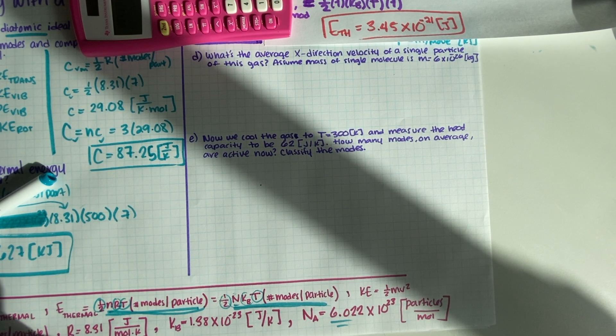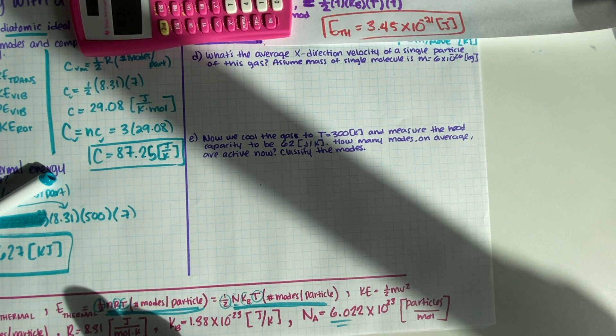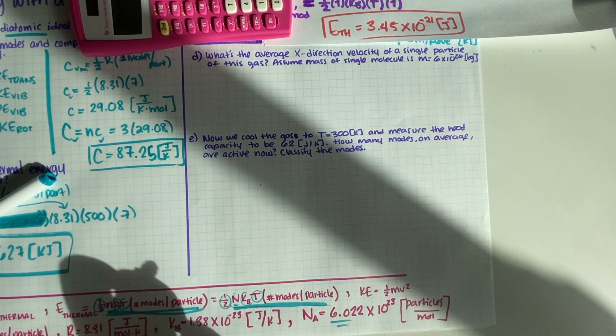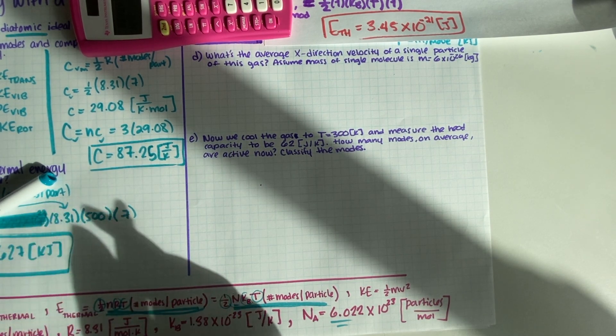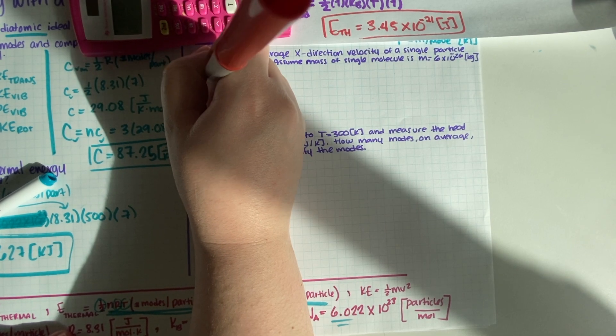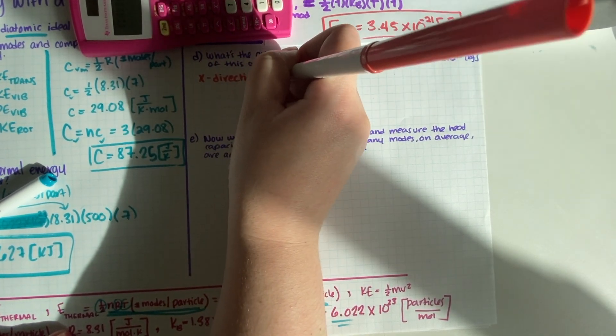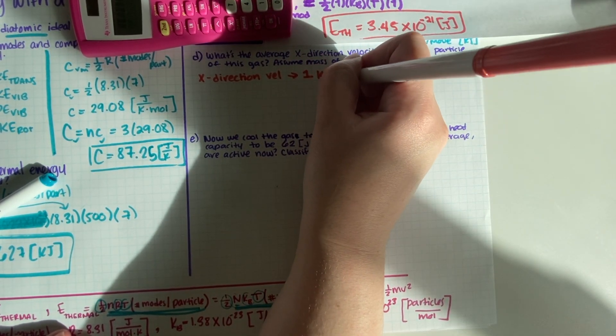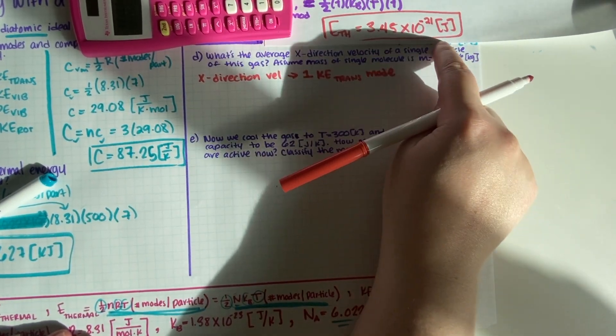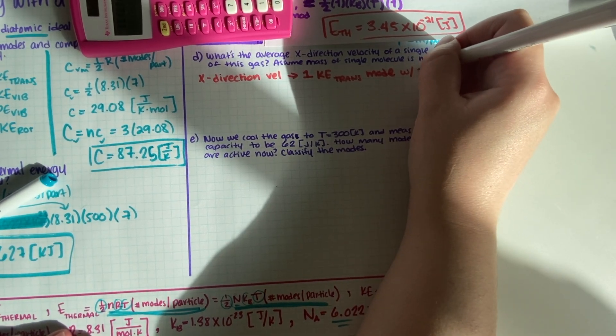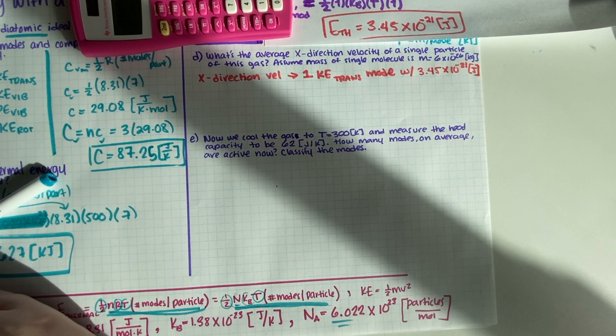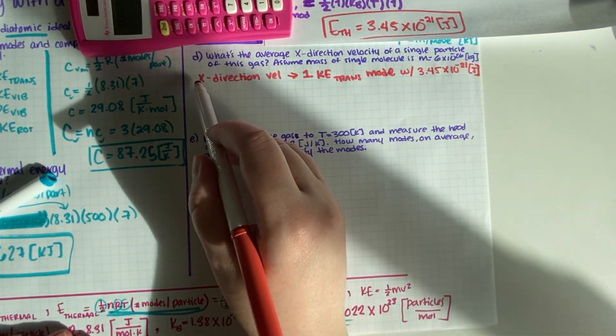So now for part D what is the average x direction velocity of a single particle of this gas, assume mass of a single molecule is 6 times 10 to the negative 26. So we know that the x direction velocity produces exactly one kinetic energy translation mode and we know exactly how much energy that has.